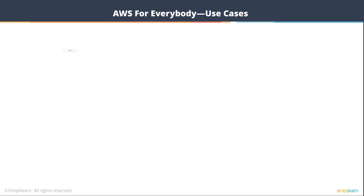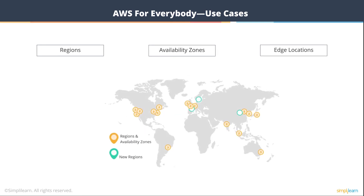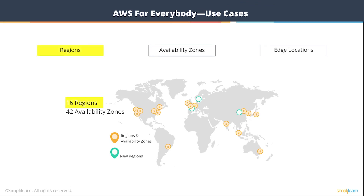Let's look at something called AWS Global Infrastructure — what AWS is made of. We have regions, which are geographical locations. As of now, there are 16 regions spread all over the world. Each region consists of two or more availability zones. Availability zones are fault-tolerant data centers consisting of one or more facilities. This is where AWS puts their servers and storage hardware. Each region has two or more availability zones to help with disaster recovery, fault tolerance, and availability.